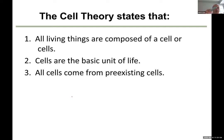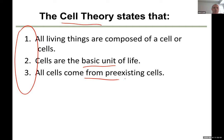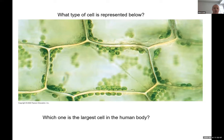Here is the cell theory and all three components: the cell is the basic unit of life, cells come from pre-existing cells, and all living organisms are composed of cells.